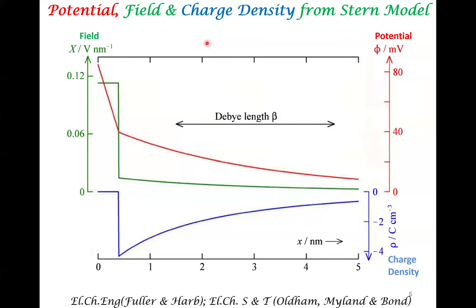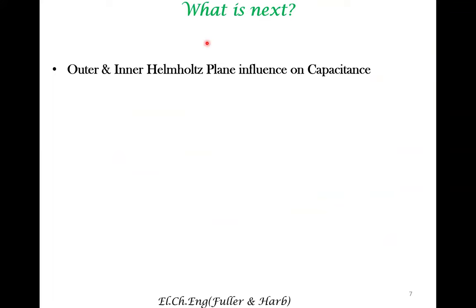Try to get an intuitive understanding of why the quantitative predictions of the Stern model behave as they do. The Stern model is fairly successful in understanding the electrochemical double-layer behavior. Its main deficiency is the asymmetry — the difference in capacitance variation at high concentration when the potential is changed toward positive versus negative regions around the potential of zero charge. To understand that, we will look at the inner Helmholtz plane behavior in the next lecture. Thank you.